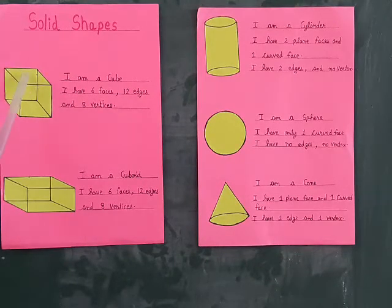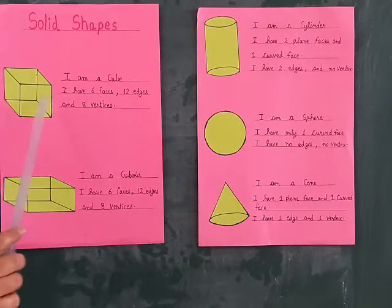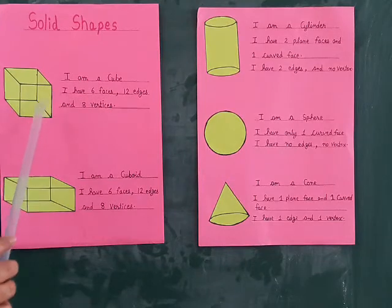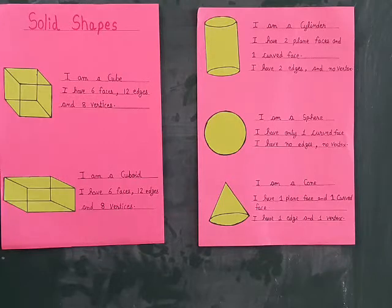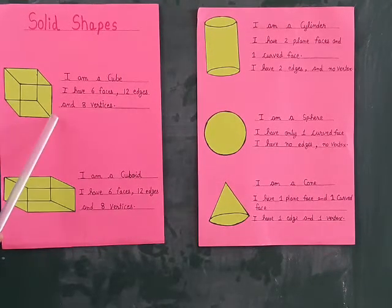There are 6 faces - this is the face, this one, this one and this one. So there are 6 faces, 12 edges. The lines are called edges and the line joints are called vertices.